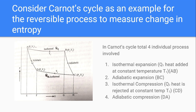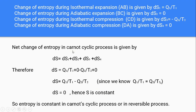During isothermal compression, the working substance rejects Q2 amount of heat to the sink at a constant temperature T2 — the sink is at T2 and the source is at T1. The fourth and final process is adiabatic compression, shown as DA in the figure. So in the Carnot cycle: AB is isothermal expansion, BC is adiabatic expansion, CD is isothermal compression, and DA is adiabatic compression.